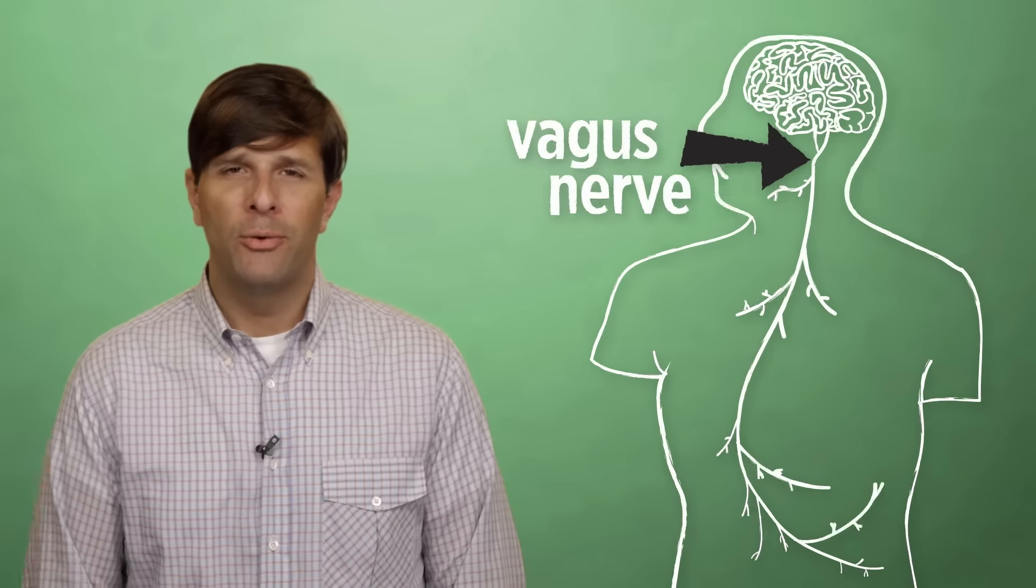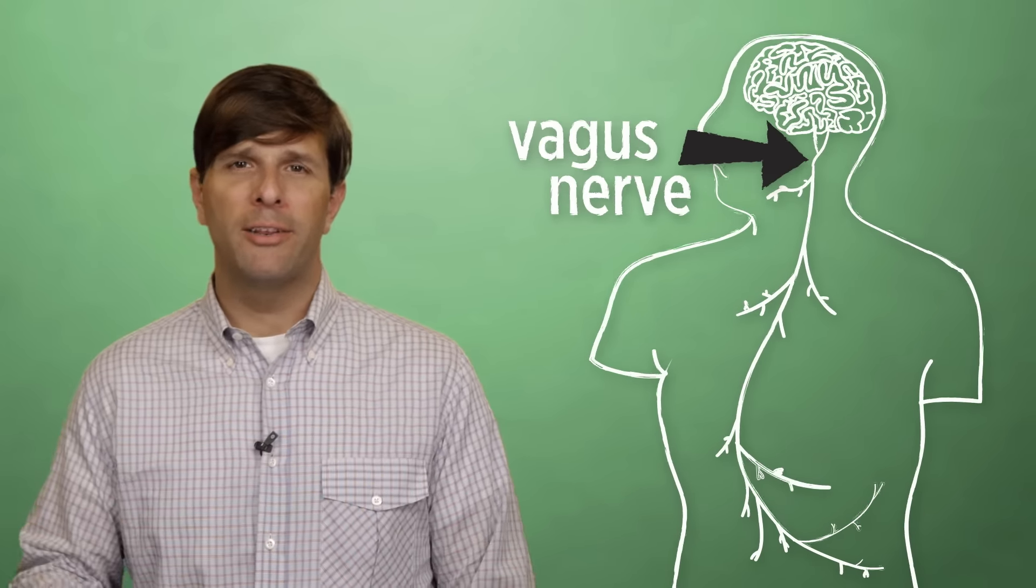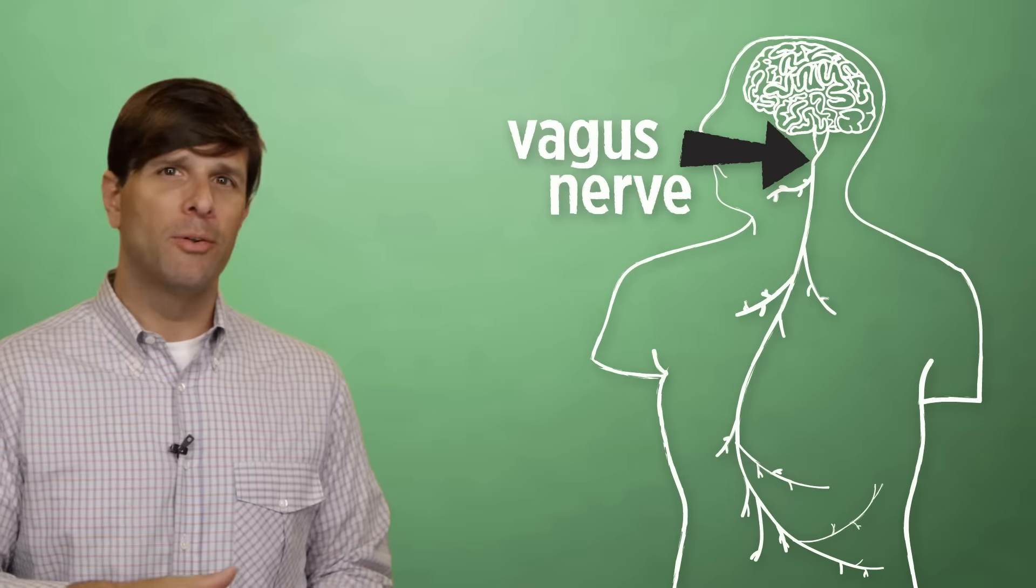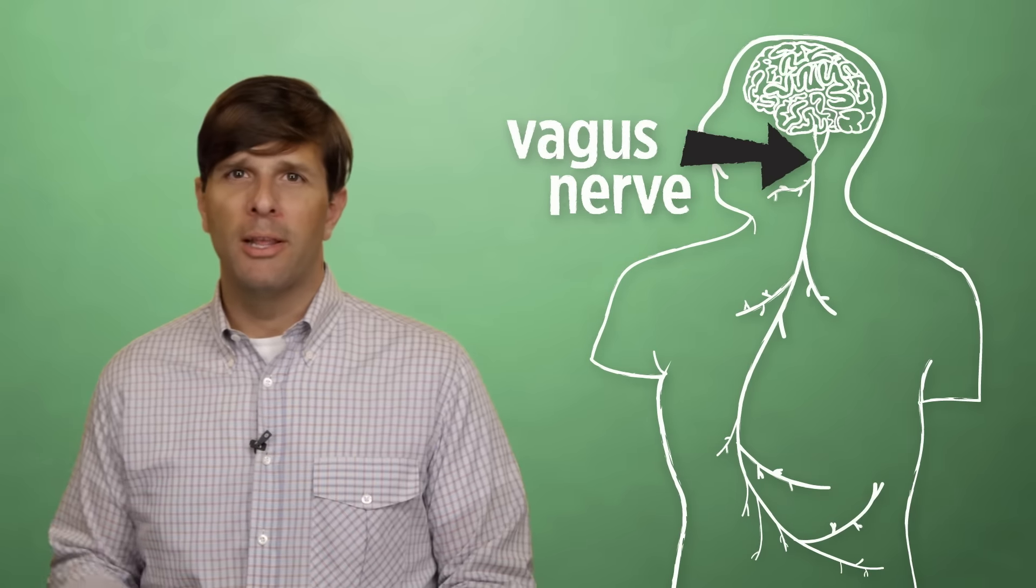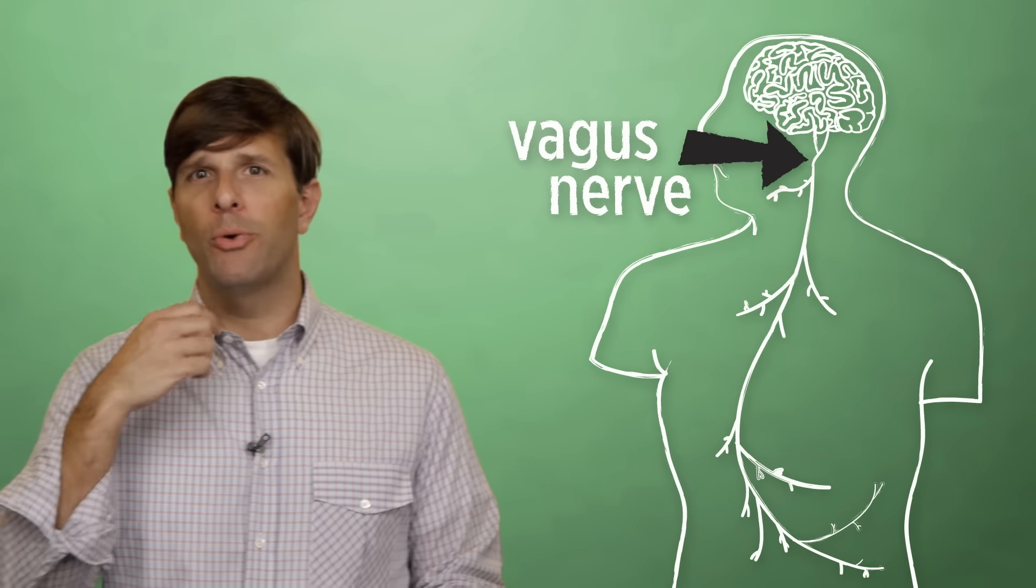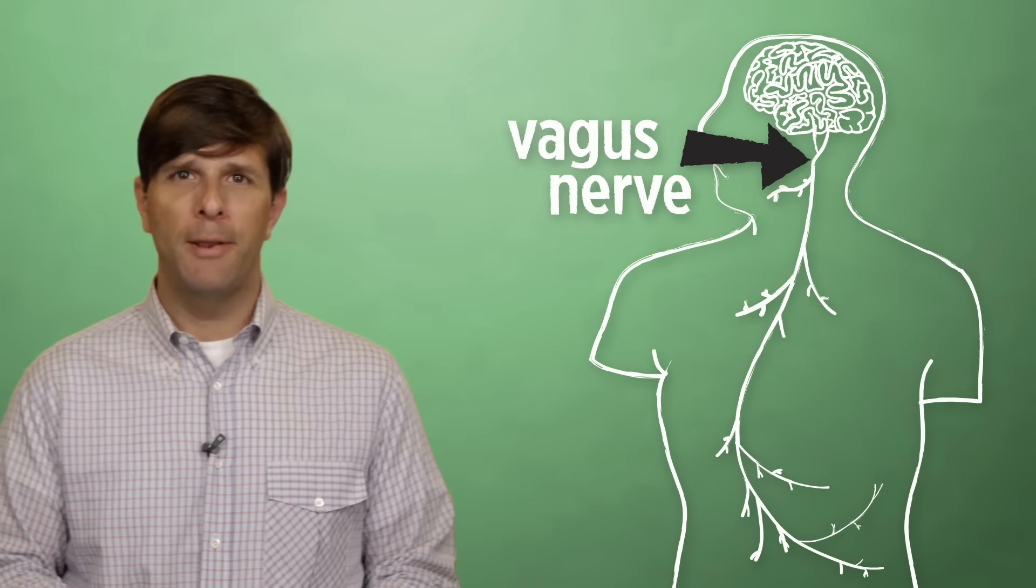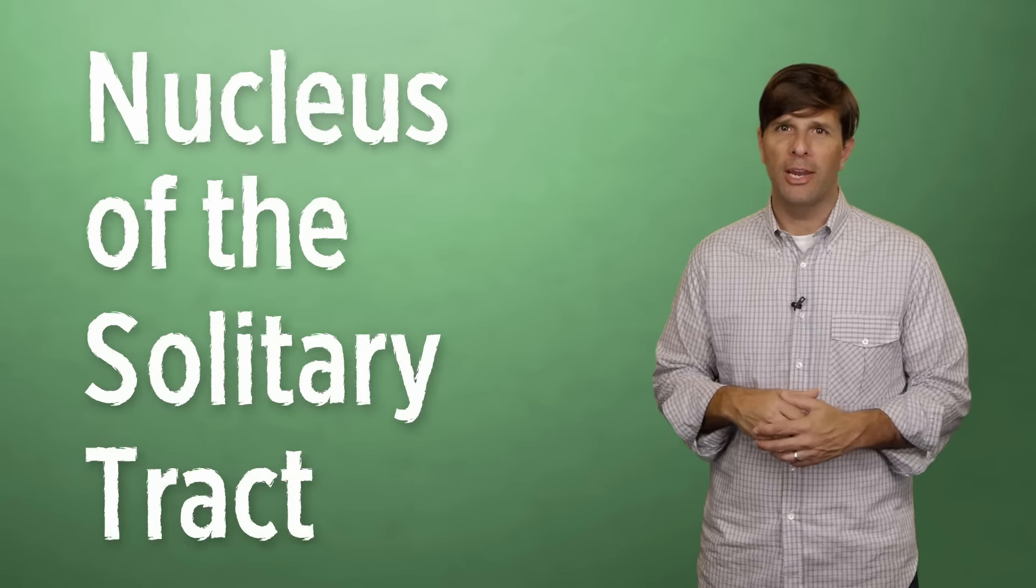At the center of all this oddness is the vagus nerve, which is a major nerve that connects your brain to various regions of your body that are involved in involuntary movement, like your heart beating or your throat swallowing. And at the other end, your vagus nerve is connected to a region of your brain called the nucleus of the solitary tract, or the NST.